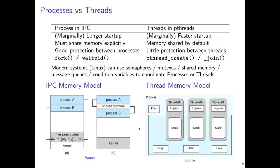Processes, as they would be launched, don't share anything except by default a few operating system endowed data structures — things like if a process opens files and forks a child, the child shares its file descriptor table. Generally you have to take special actions to share things between processes, which gave rise to our discussion of IPC, or inter-process communication. There we saw shared memory, message queues, and various other modes by which two processes, normally completely isolated, can begin to communicate.